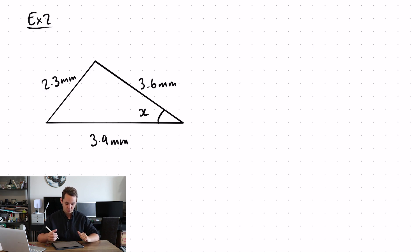So, same process. Label up your sides first. But this time I've got an unknown angle. So I'm going to use a capital C for the angle, which means the side opposite is lower case C.